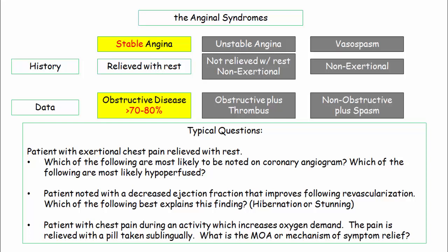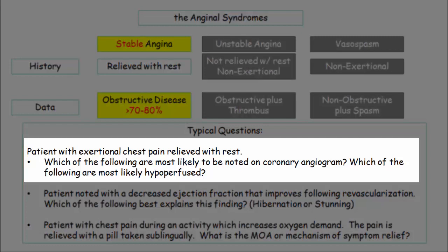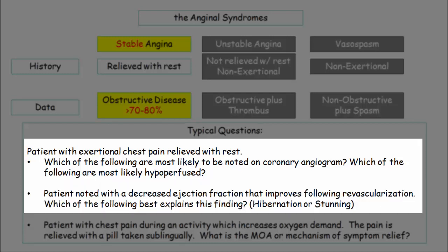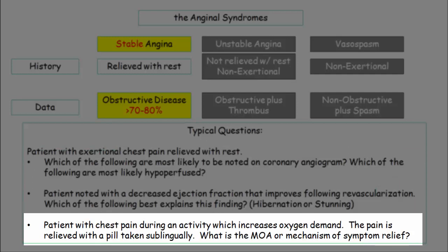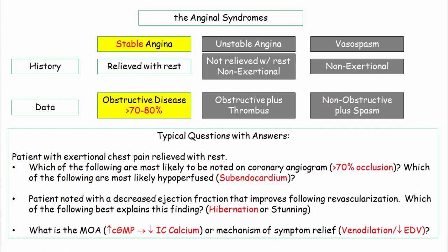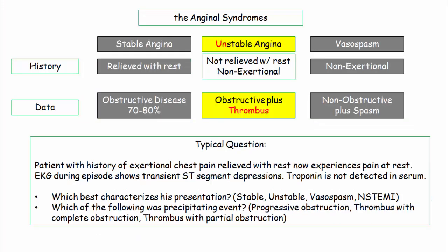A typical question on stable angina will ask you to correlate exertional chest pain relieved by rest with the degree of vessel occlusion, and to know that the subendocardium is hypoperfused. They can query you on hibernating myocardium, where your choices will boil down to hibernation versus stunning. You must also be familiar with the mechanism of action of nitrates and how they achieve symptom relief. Typical questions for unstable angina describe a patient with a history of exertional chest pain relieved with rest, now experiencing pain at rest, with transient ST-segment depressions on EKG and undetected troponin; they'll ask you to describe the syndrome and query the precipitating event focusing on plaque rupture and the partially obstructing clot.